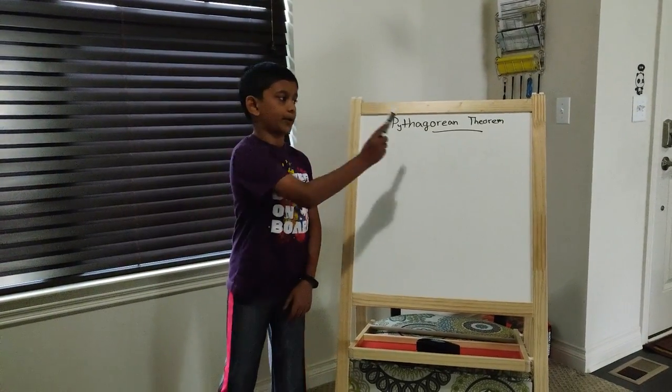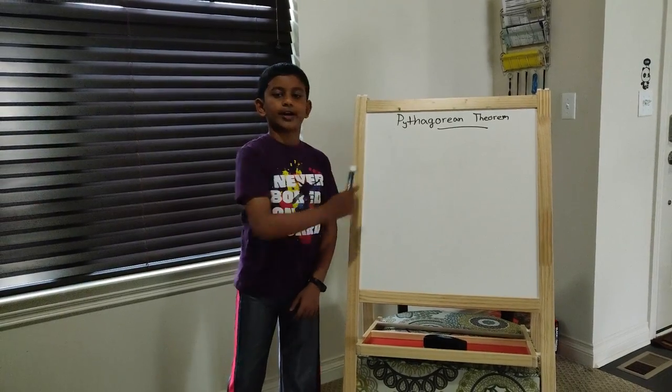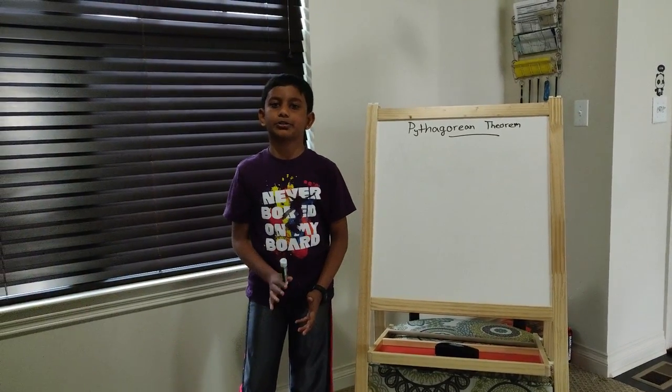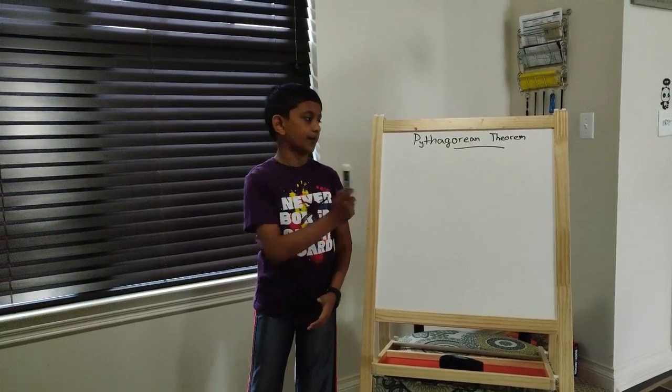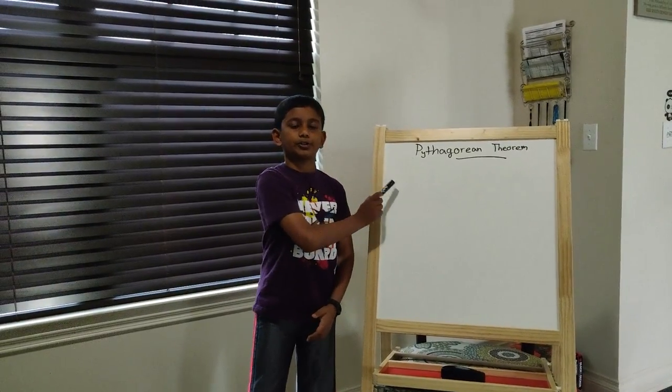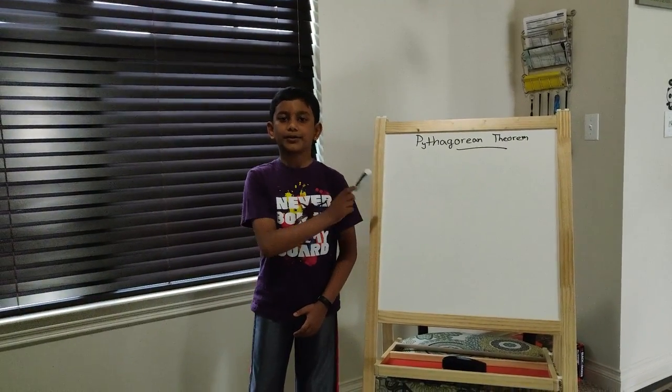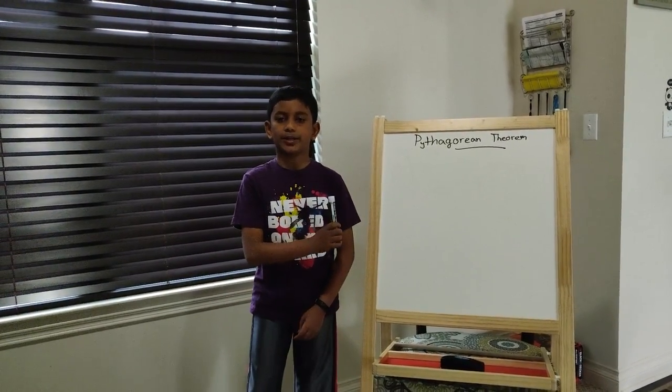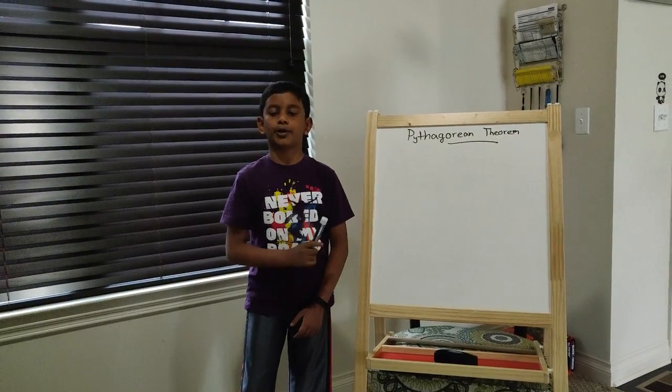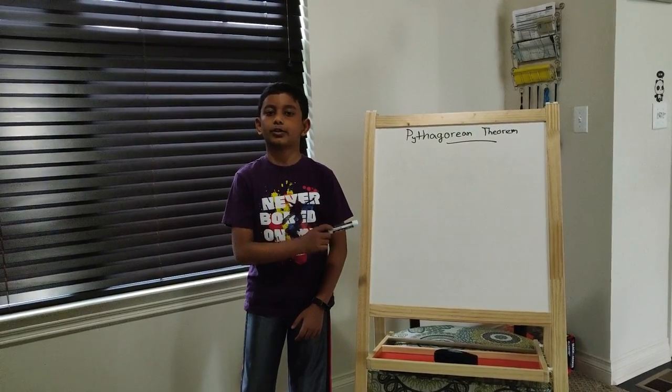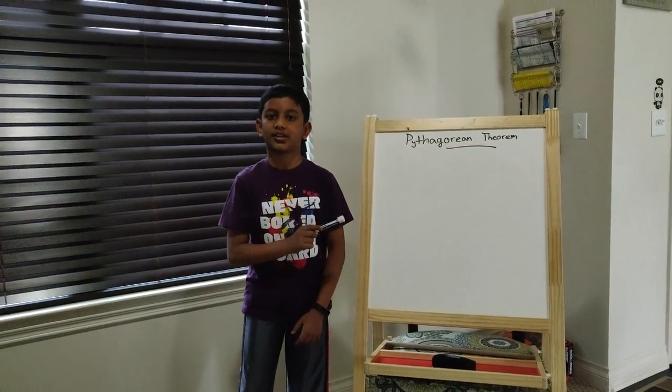I am going to talk about the Pythagorean Theorem. Now, what is the Pythagorean Theorem? The Pythagorean Theorem, or Pythagoras Theorem. Pythagoras is the man who found a formula for finding if a triangle has a right angle or not.